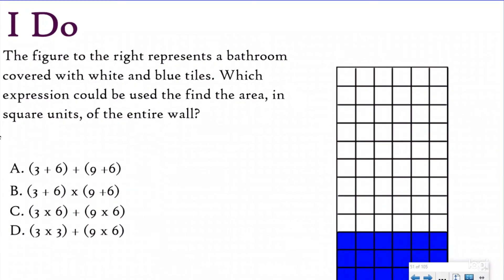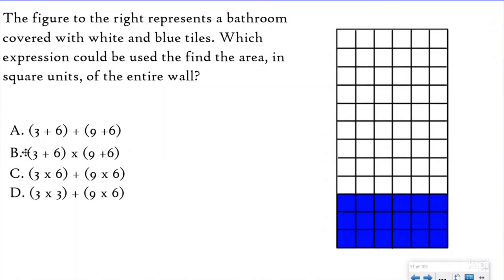Because finding the area of a rectangle is the same thing as doing just a multiplication equation using an array, we can use our properties of multiplication, such as the distributive property when we solve for area. So now that we've made the connection between our distributive property with arrays and our distributive property with area, let's take a look at how they're going to ask you these questions. The question says the figure to the right represents a bathroom covered with white and blue tiles, which expression can be used to find the area in square units of the entire wall.